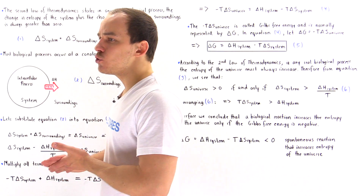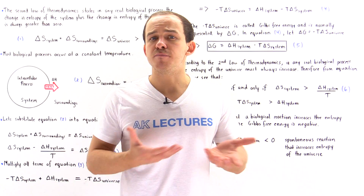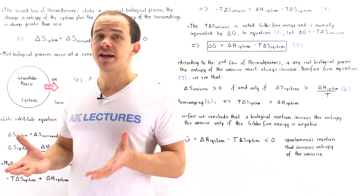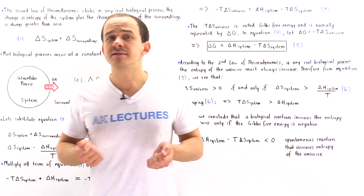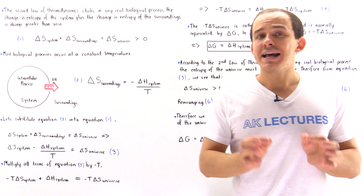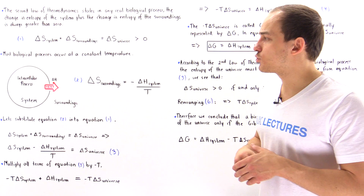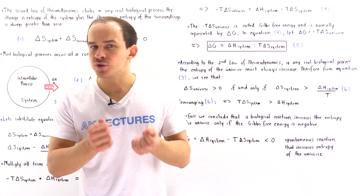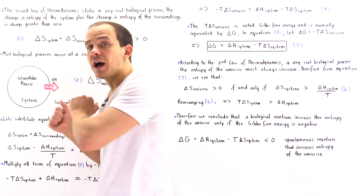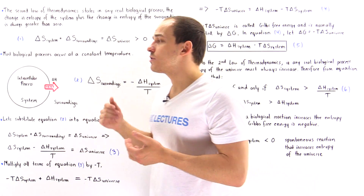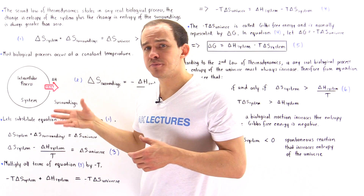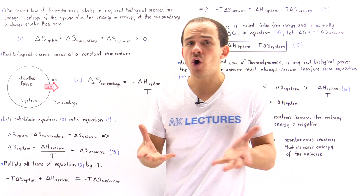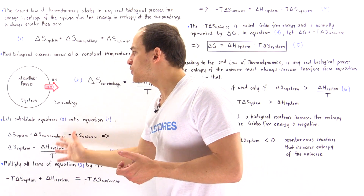The reason we assume constant temperature is because all the different types of biological reactions that take place in nature usually occur under constant temperature conditions. For example, reactions that take place inside our body and inside the cells of our body occur at a constant temperature of about 36.8 degrees Celsius. So let's suppose we're inside a cell and some type of intracellular process takes place — the cell and the process is the system, and everything outside the cell is the surroundings.